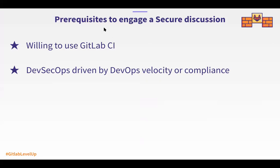There are a couple of prerequisites to be aware of. In order for your customer to use GitLab Secure capabilities, they need to be willing to use GitLab CI — our secure capabilities are embedded within CI. You can use Secure as a reason for them to get onto CI, but if they're not willing, you may be going down the wrong path for a secure conversation.